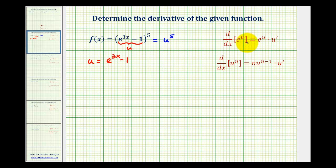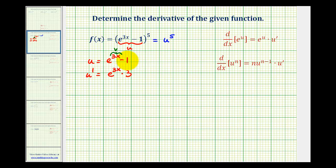Looking at our formula here, for e to the three x, we'd have to let u equal three x, but since we've already used u, we'll go ahead and call this v. So the derivative of e to the v would be e to the v times v prime. So u prime is going to be equal to e to the three x times the derivative of three x, which would be three, and then minus the derivative of one, which is zero. So this would be three e to the three x.